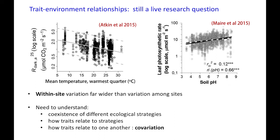There are tons of papers about trait-environment relationships in the literature. Here's a non-random selection of two from 2015. On the left, there's a lovely paper by Owen and a cast of 60, showing the relationship between dark respiration standardised to 25 degrees and temperature of the warmest quarter. On the right, that's the leaf photosynthetic rate at light saturation in relation to soil pH. What I want to emphasise is that the amount of variation in the y-axis at any given x value is far greater than the mean difference across the whole line. The within-site variation is really very considerable, and understanding why there's so much trait variation within sites is something we don't do well in models yet.